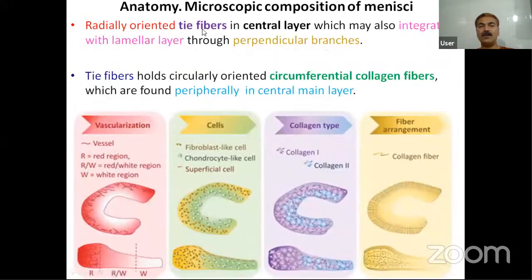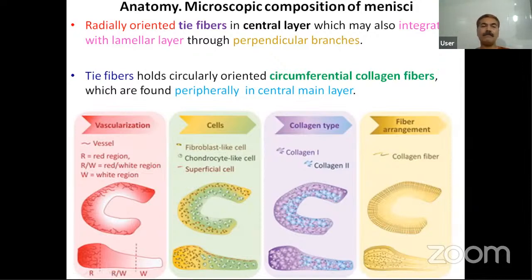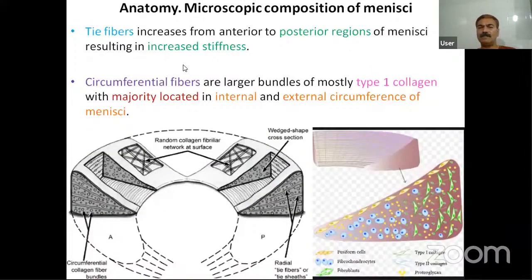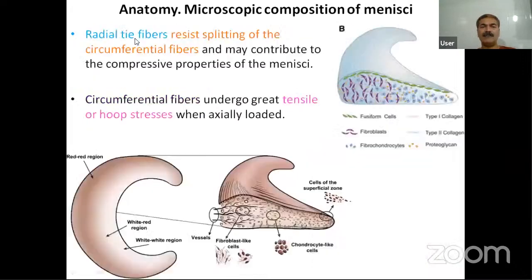In the central layer, radially oriented fibers are known as tie fibers. They integrate with the lamellar layer through perpendicular branches. The tie fibers hold the circularly oriented circumferential collagen fibers found in the periphery of the central main layer. The tie fibers increase in number from anterior to posterior, increasing stiffness. The circumferential fibers are larger bundles composed mainly of type I collagen, located in the internal and external circumference. The radial tie fibers resist splitting of the circumferential fibers and contribute to the compressive properties of the menisci. The circumferential fibers undergo great tensile hoop stresses when loaded axially.